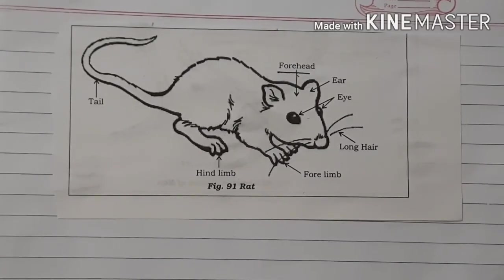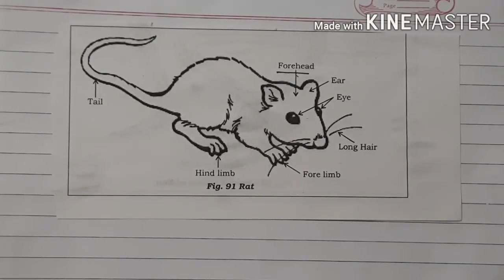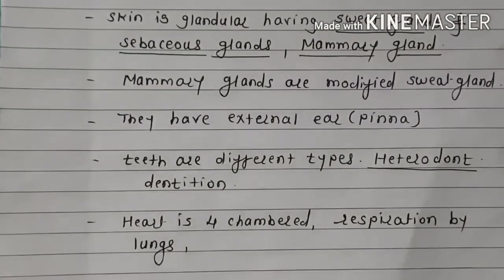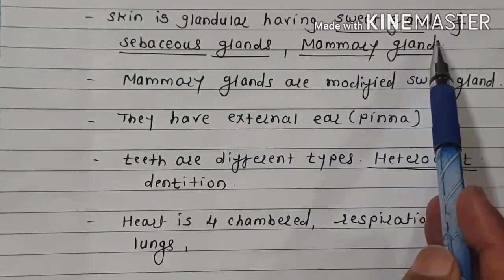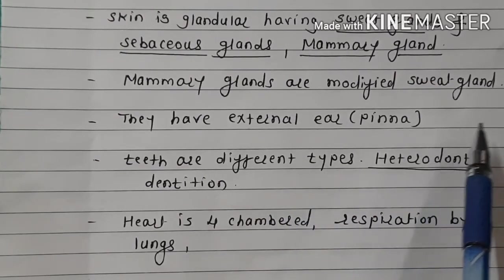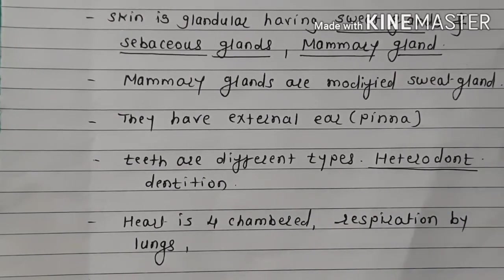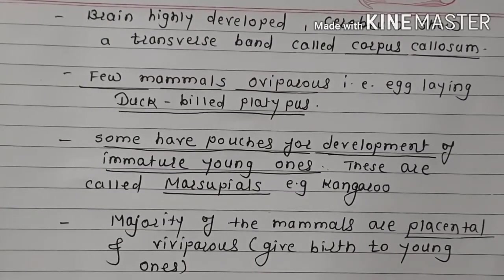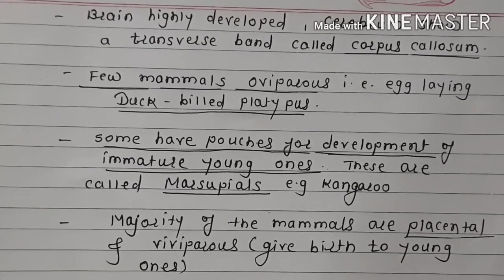Exoskeleton is in the form of hair, fur, nail, hoof, horns, etc. Skin is glandular, having sweat glands, sebaceous glands, and mammary glands. Mammary glands are modified sweat glands. They have external ears. Teeth are of different types — it shows heterodontic dentition. Heart is four-chambered. Brain is highly developed. Cerebrum shows a transverse band called corpus callosum.